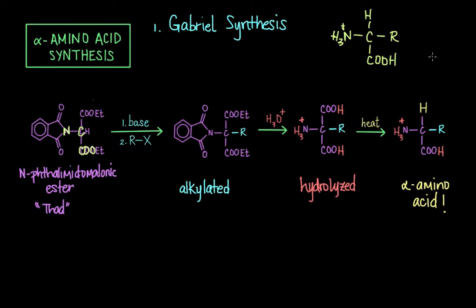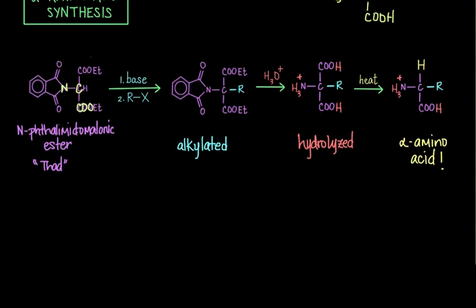And so now that we have Gabriel synthesis down, let's move on to Strecker synthesis here. So next we have Strecker synthesis, and the Strecker method is considered to be a somewhat more elegant way of synthesizing amino acids, because it's really a lot more simple and efficient. Just remember that simplicity is elegant.